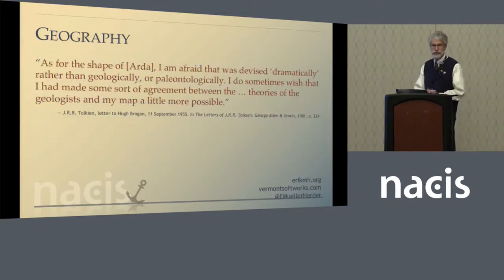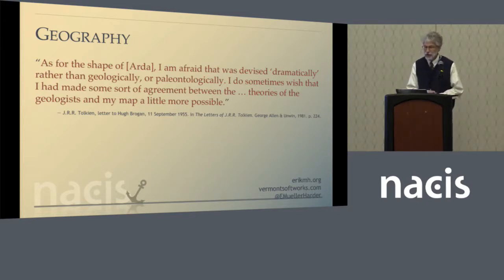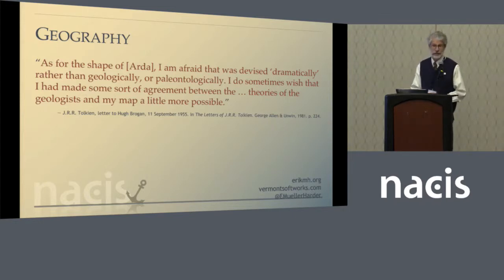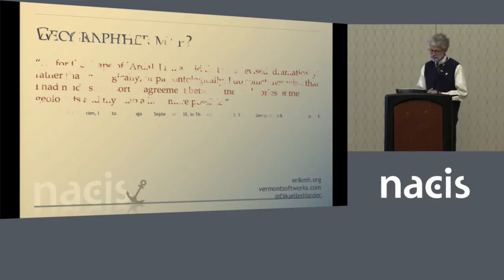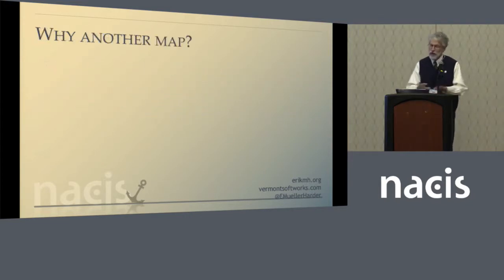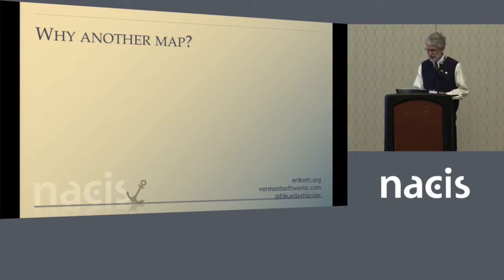In a 1955 letter, just as the tectonic plate theory was getting figured out, Tolkien wrote: 'As for the shape of Arda, I'm afraid that was devised dramatically rather than geologically. I do sometimes wish that I had made some sort of agreement between the theories of the geologists and my map a little more possible.' So, with all of that behind us, let's quickly look at why there should be another map.